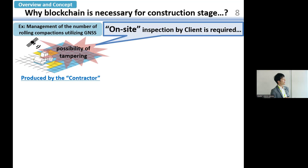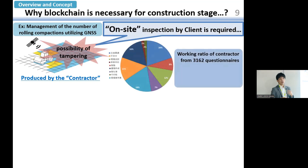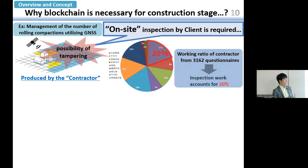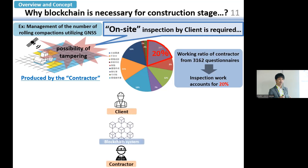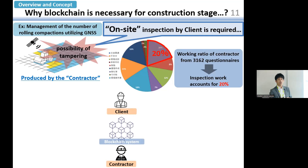That is why, in Japanese regulation, on-site inspection by the client is required. At the beginning of our research, we conducted a survey to understand the working ratio of contractors with more than 3,000 respondents. We found that this on-site inspection work accounts for 20% of contractors' working time, which is a very significant impact.